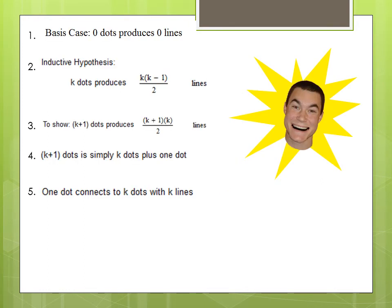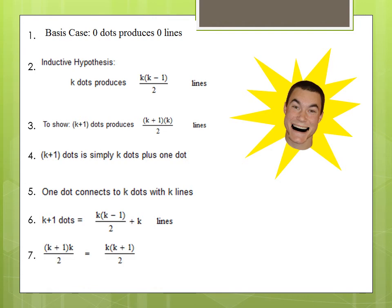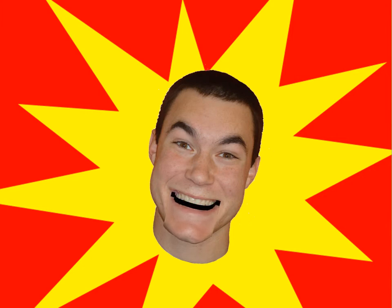With this information, we can substitute in our inductive hypothesis. k plus one dots is equal to k times k minus one over two lines plus k lines. By finding a common denominator and adding, we get k plus one times k over two equals k plus one times k over two. We did it! So just remember: if you can find a basis case and write an inductive hypothesis, you can use proof by mathematical induction.